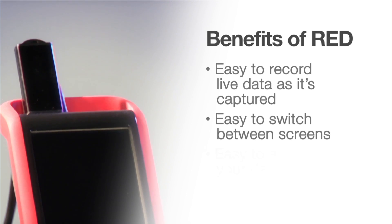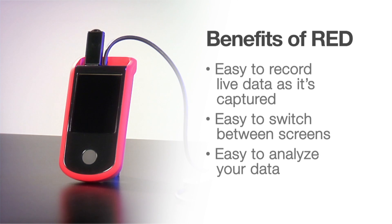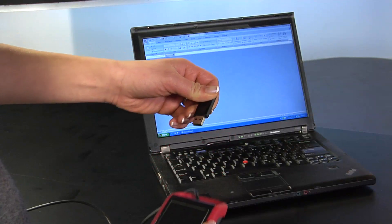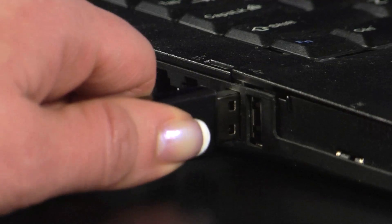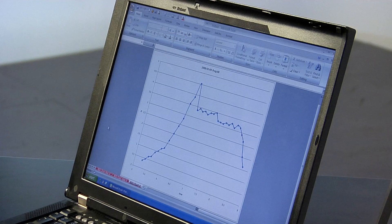Once you've collected your data, you can analyze it in just three easy steps, without any help from your school's IT department. Simply remove the USB from the unit, put it in your computer, and open the file in Excel or any other data analysis program you like.